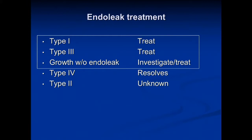For treatment: type 1 and type 3, and growth with no endoleak, all need to be treated or investigated and treated. Type 4 does not need to be treated — those go away after the anticoagulation during the case resolves. And type 2 still is not known, and we'll go through these.